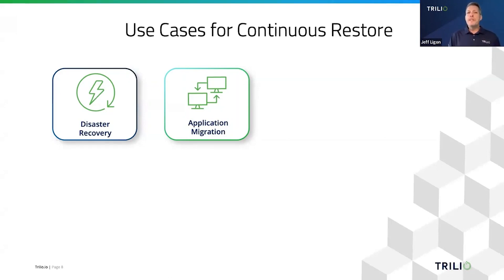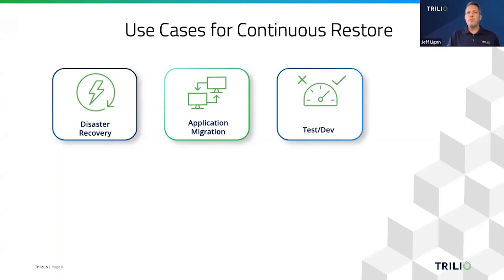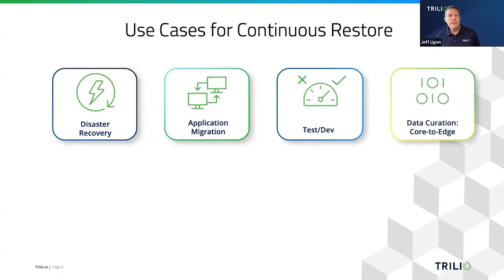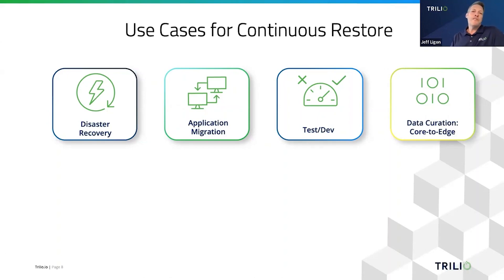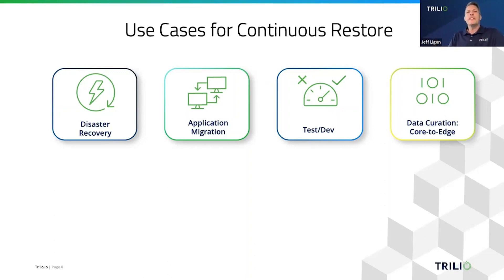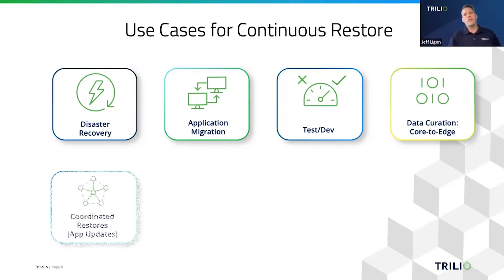There are all kinds of scenarios for why you would want to move applications around different Kubernetes clusters. Trilio enables you to do this, and now with continuous restore, helps you do it even faster because you're pre-staging all of that data. Kubernetes at the edge is also a topic we're hearing more and more of — some applications use small Kubernetes clusters on the edge, with larger master clusters in the core. You could use continuous restore to have edge clusters continuously streaming data back to your core sites in an automated, efficient fashion.